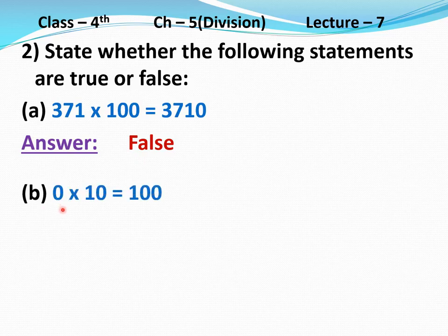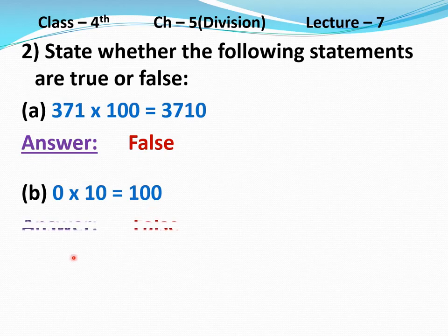Part B: 0 multiply 10 equal to 100. If you multiply 0 by any number, you will get 0 as the product. But here 100 is written, so this statement is false. Answer: False.